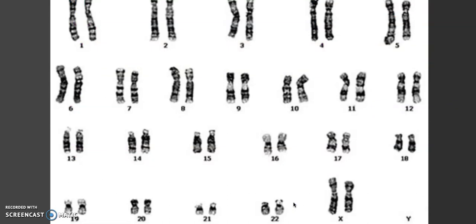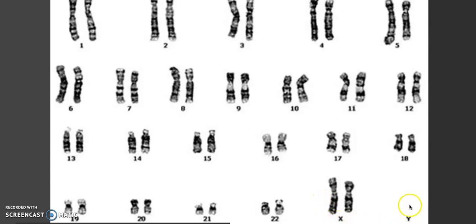Looking at this karyotype again — from this karyotype, can you tell if this individual is male or female? We can, because we can look down here at the sex chromosomes. Females have two X chromosomes, and males have one X and one Y chromosome, so the Y chromosome would be here if this karyotype belonged to a male.